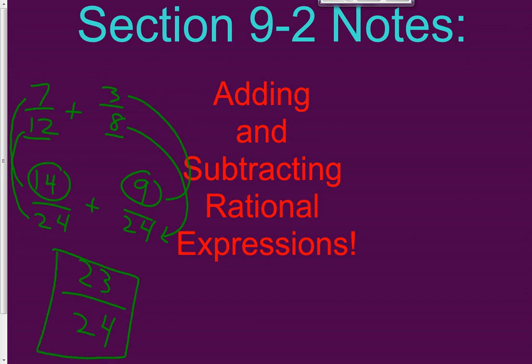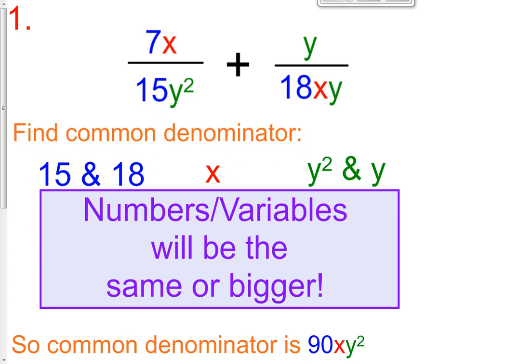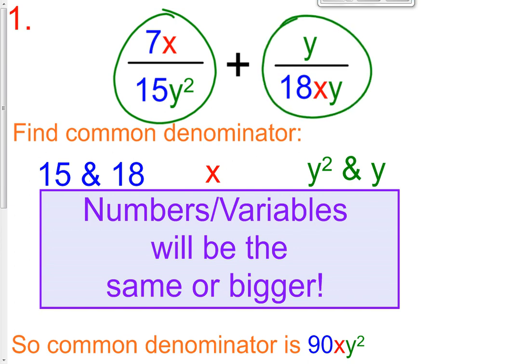We're going to do the exact same thing with rational expressions, which is just a fraction — but now we throw in polynomials in the numerator and the denominator. So we have the fraction 7x divided by 15y², plus the fraction y divided by 18xy.